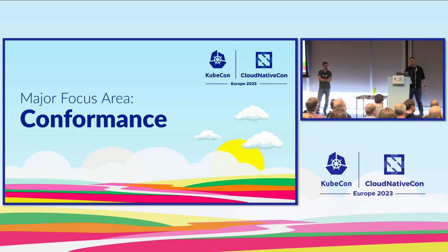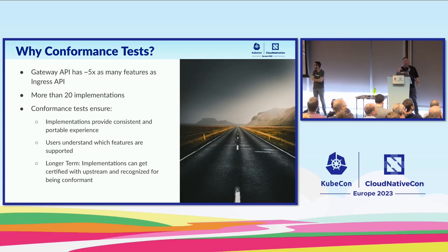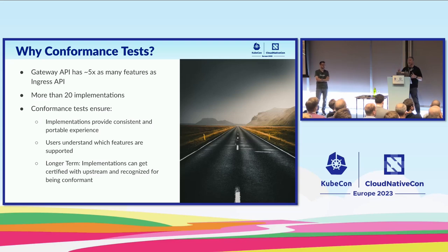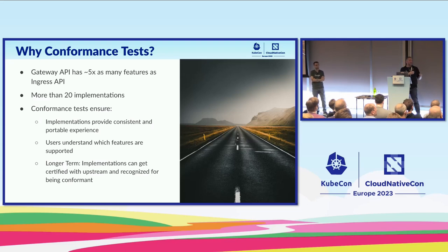Gateway API has tons of features — at least five times as many as Ingress already — with heaps of implementations. Our three primary goals are portability, extensibility, and role-oriented design. Portability is number one: the only way to have so many implementations and be confident that you can pick up your config and move it to another implementation and have it work is to have a really solid set of conformance tests that validate the behavior you're asking for is the behavior you get.